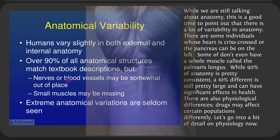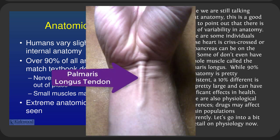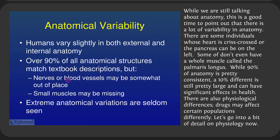Even looking at cadavers, you'll see small differences in how arteries and veins run. Some people don't even have a muscle called the palmaris longus — if you flex your wrist and see a tendon in the middle of your forearm, you have it, but about 10% of people don't. While 90% of anatomy is pretty consistent, a 10% difference is still significant when it comes to health and treating people. There are also physiological differences — drugs might affect certain populations differently.